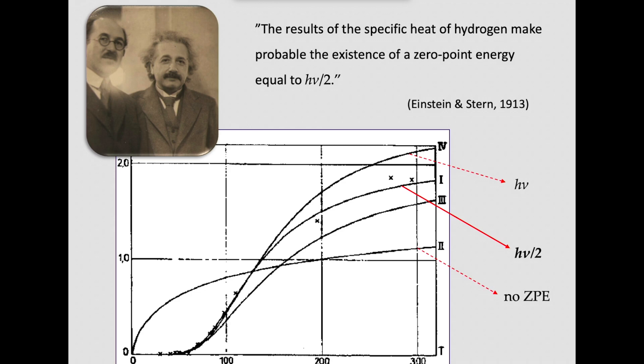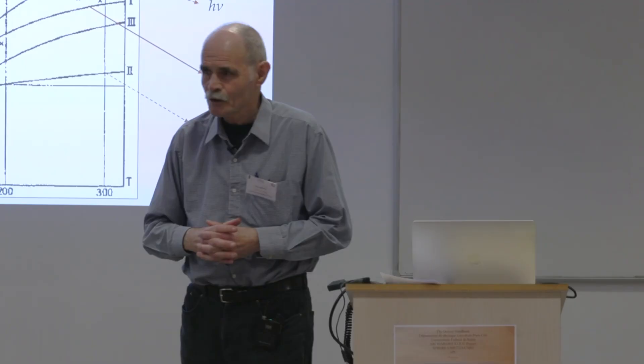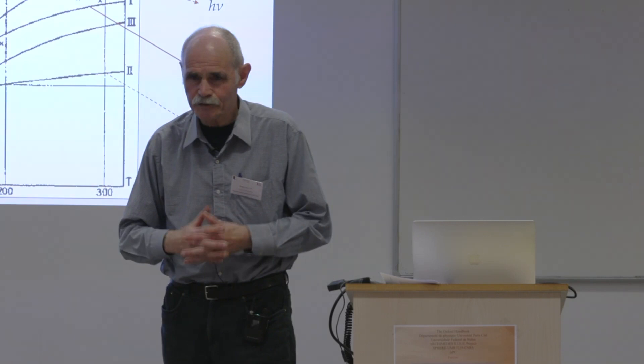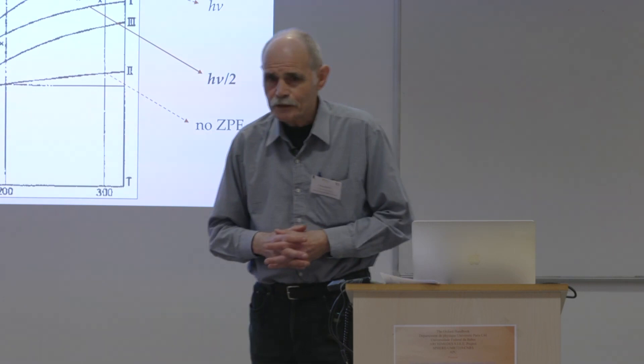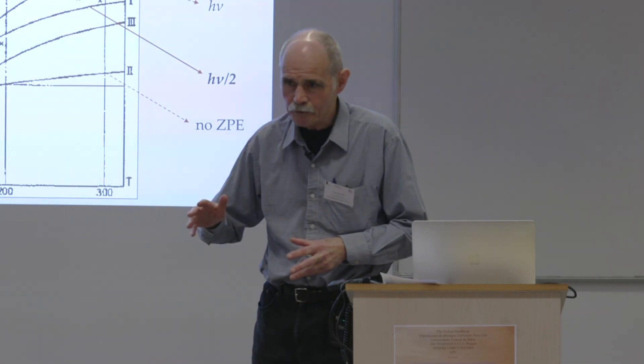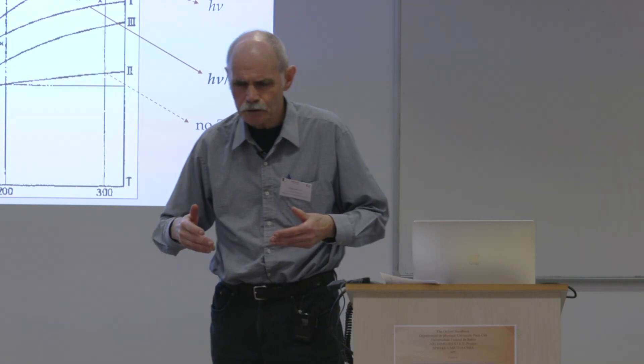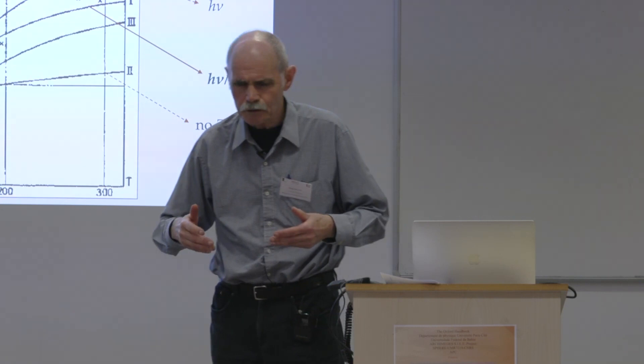Einstein apparently believed that only very briefly, because a couple of months later he had second thoughts — confessed in a letter to his friend Paul Ehrenfest, describing the concept of zero-point energy as 'Mausetot' — completely dead, or dead as a doornail. But Einstein, like most other people, was not really sure whether it was a good or a bad idea. Most people were undecided, waiting for experimental evidence that could either reject or confirm the prediction.